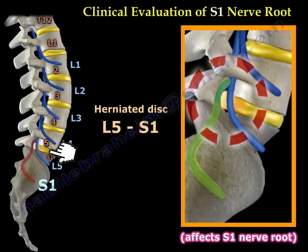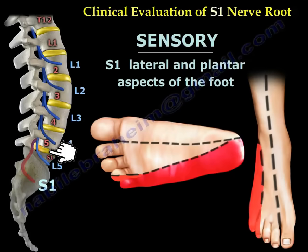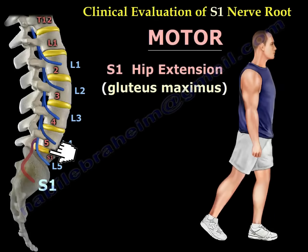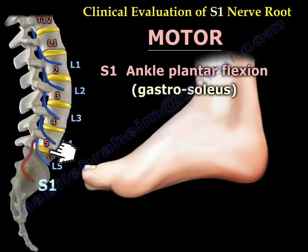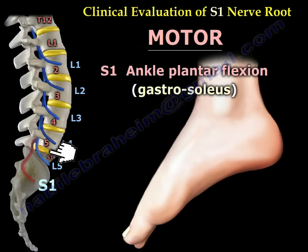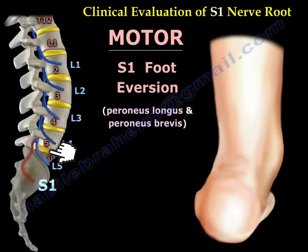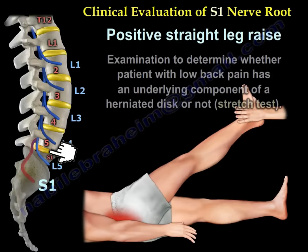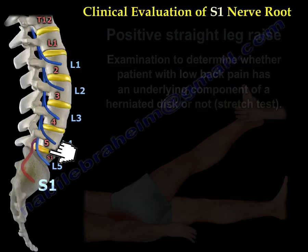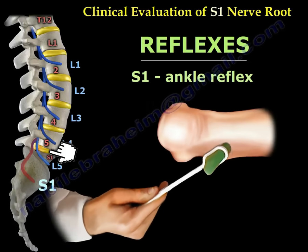Herniated disc between L5 and S1 will affect the S1 nerve root. The sensory of S1 will be the lateral and plantar aspect of the foot. The motor is hip extension (gluteus maximus), but ankle plantar flexion via the gastrocnemius-soleus complex and foot eversion via peroneus longus and brevis are the most clinically used. A positive straight leg raise is also used to determine if the patient with low back pain has an underlying herniated disc. The S1 reflex gives you the ankle reflex.